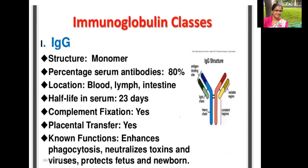To summarize IgG: its structure is a monomer; it constitutes 80% of serum antibody — the largest share in the immunoglobulin pool. Its location includes blood, lymph, and intestine. Half-life in serum is 23 to 25 days. It undergoes complement fixation via the classical pathway. Placental transfer is yes. Its known functions include enhancing phagocytosis, neutralizing toxins and viruses, and protecting the fetus and newborn.